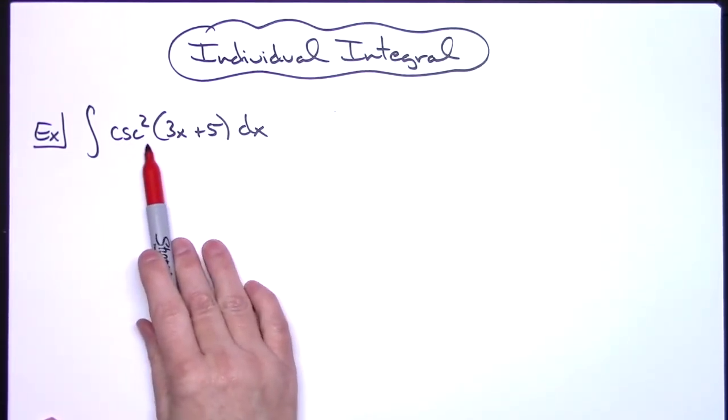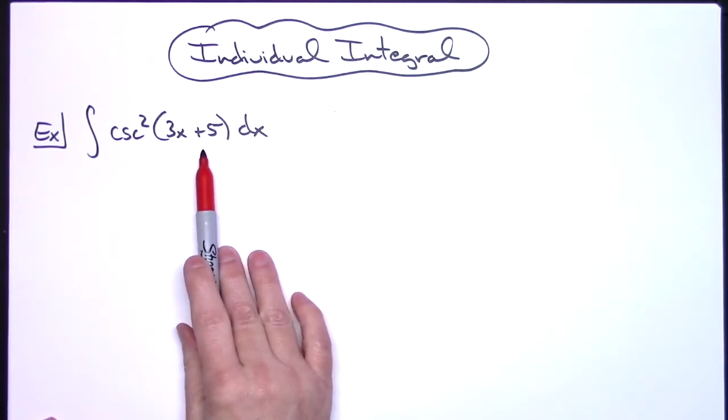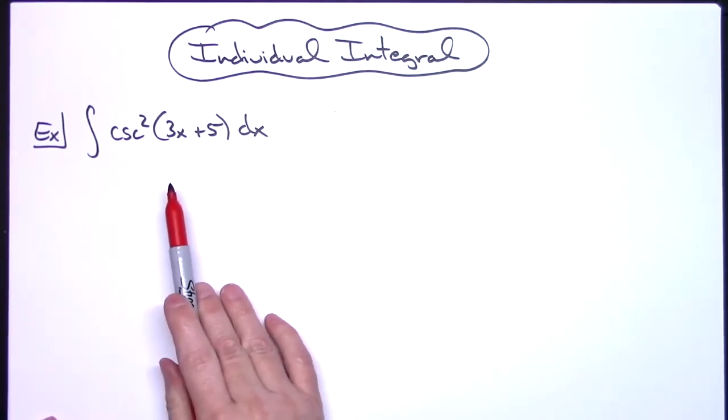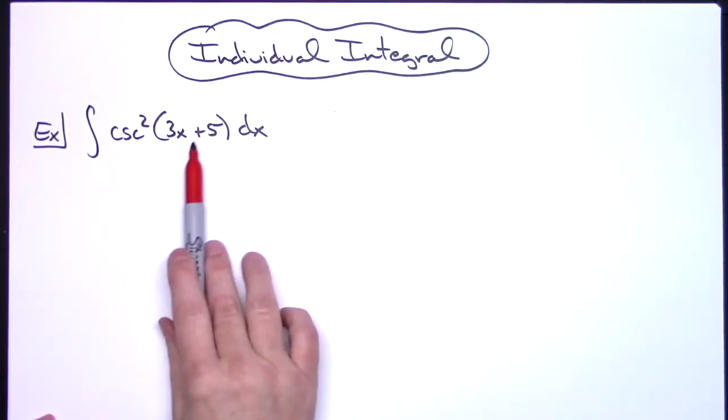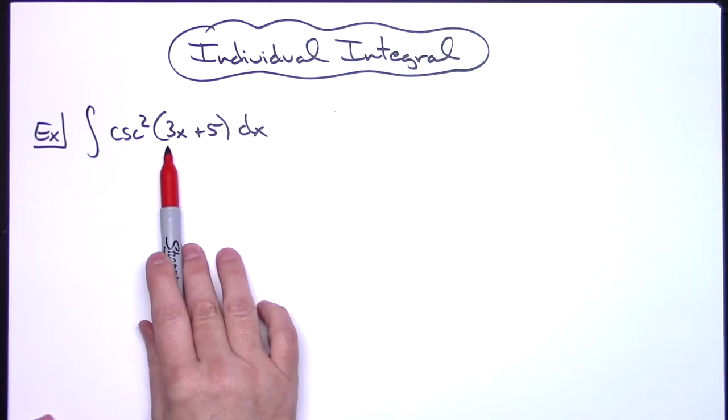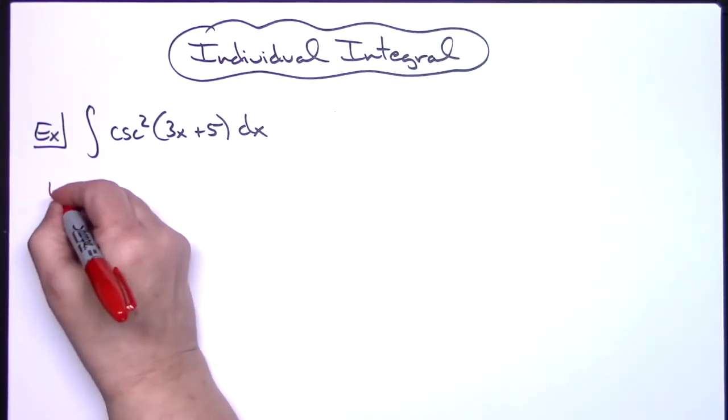cosecant squared of (3x + 5). We've got a composite function here. A good place to start with letting your u be would be that inside portion of the composite function, so 3x + 5. So we're going to say let u = 3x + 5.